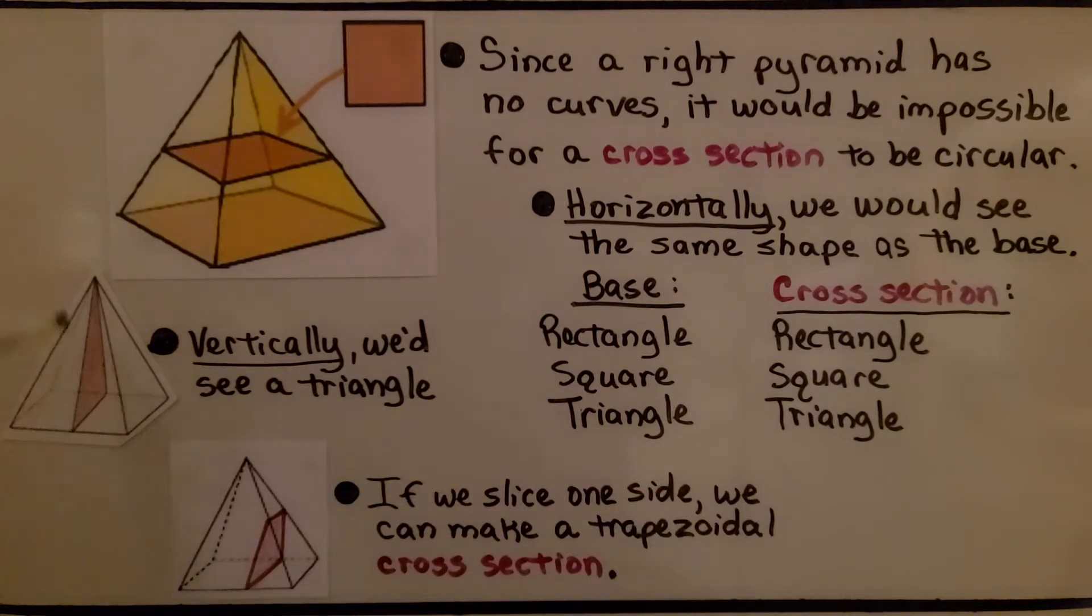Vertically, we'd see a triangle. If we slice one side, we can make a trapezoidal cross section. That means our cross section would be in the shape of a trapezoid.